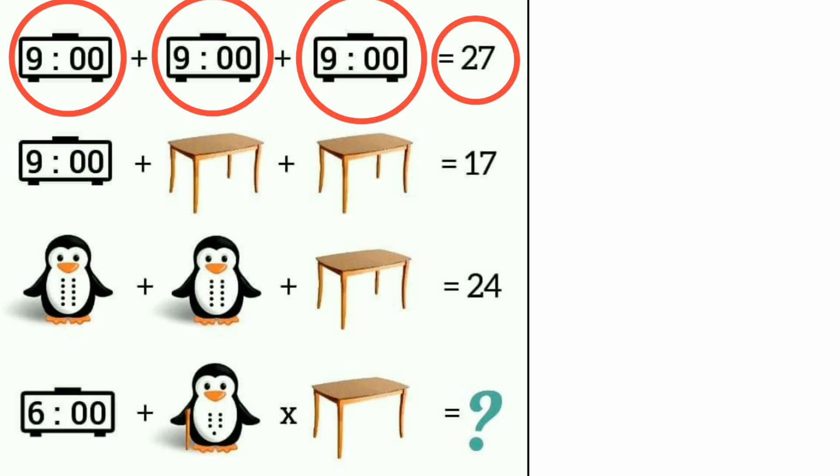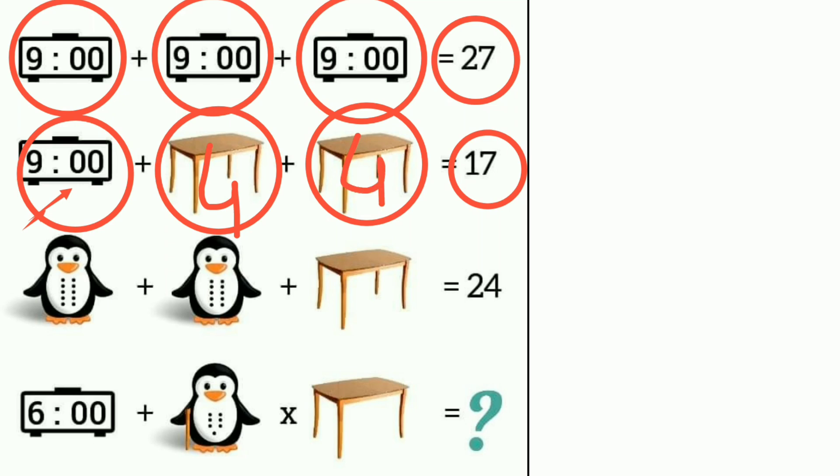Now look at the next one. You can see here this one is 9, one table is here and here also a table, and we need here total 17. From 17, if you subtract this 9, how much do we get? Remaining 8. 8 means the value of each table is equal to 4. So we can write here 4 and here also 4. Hope you understand this one. You can see that there are 4 table legs also, so the value of the table is equal to 4.